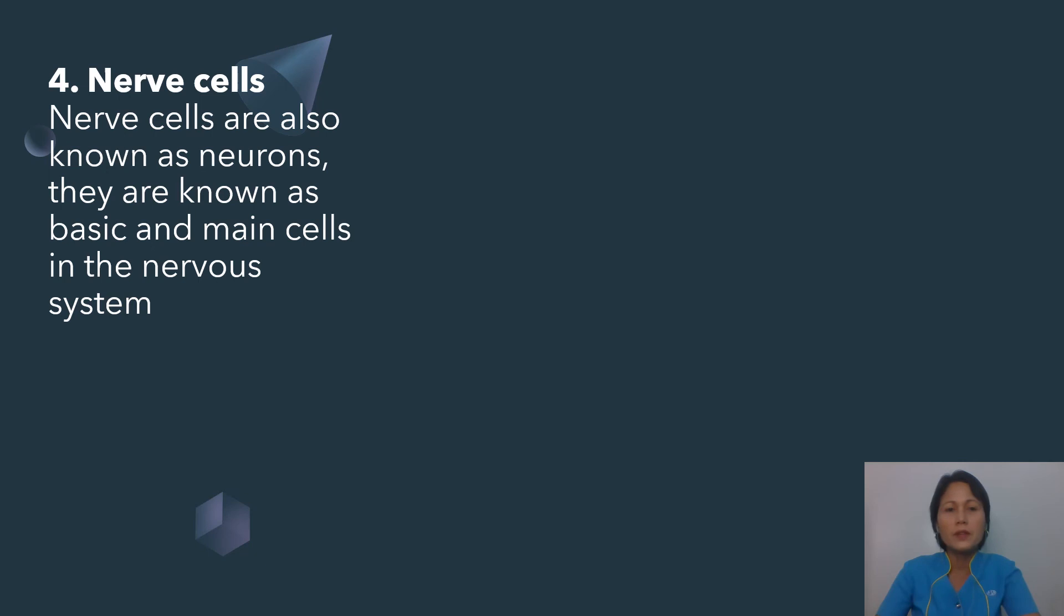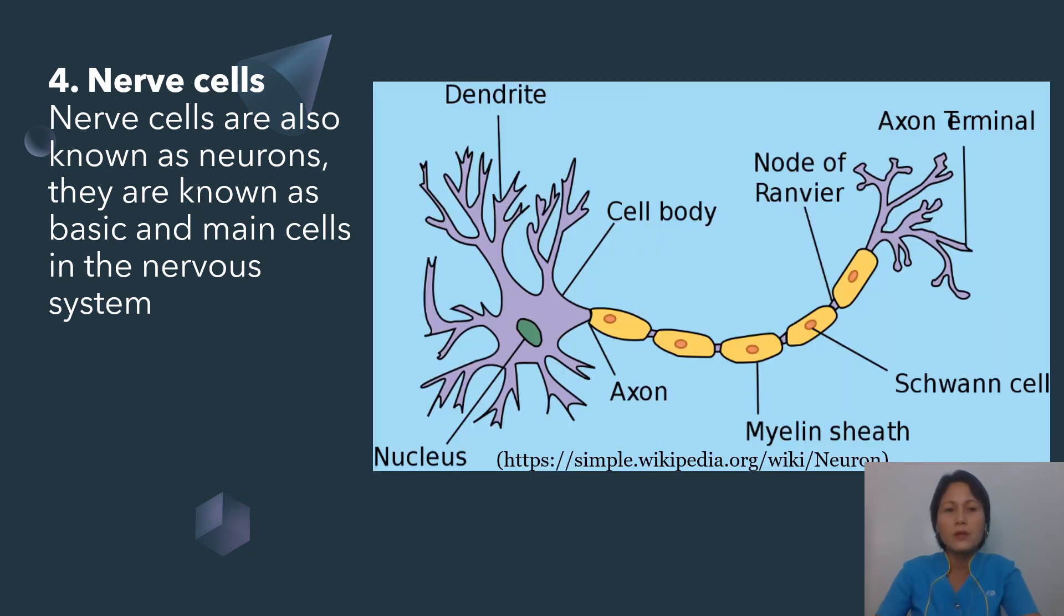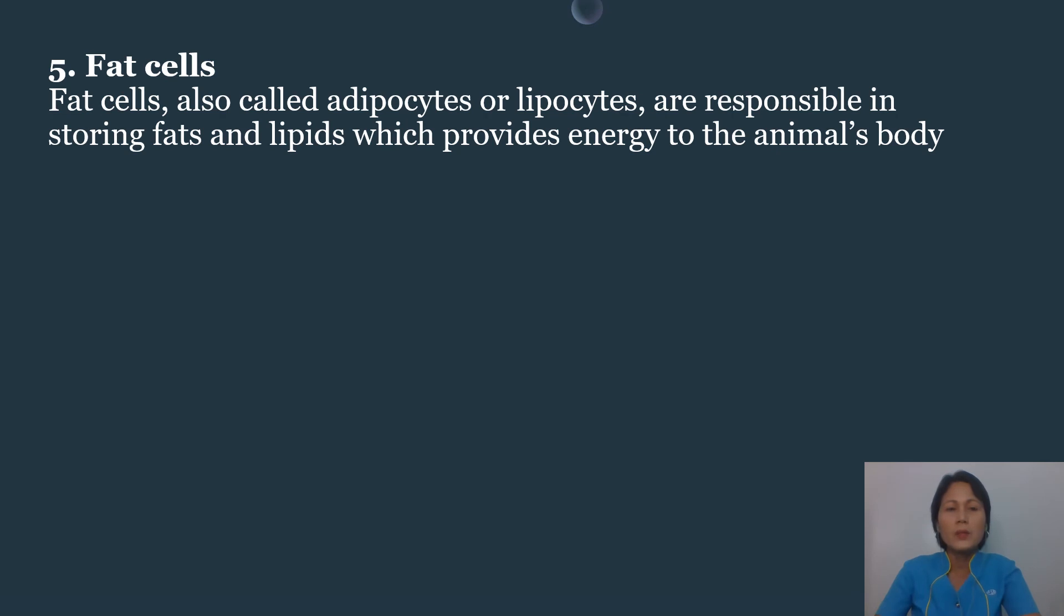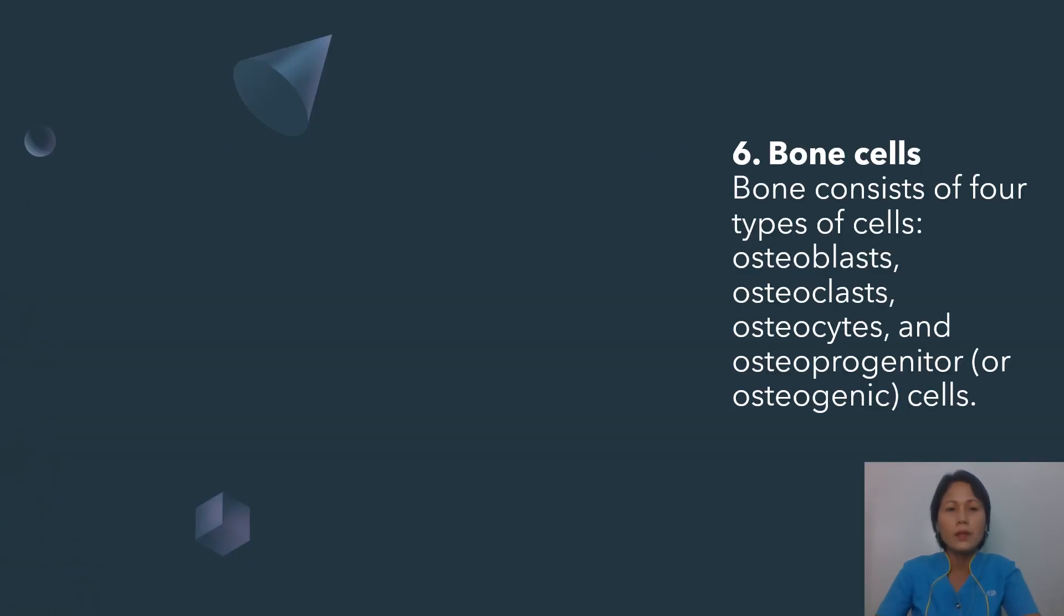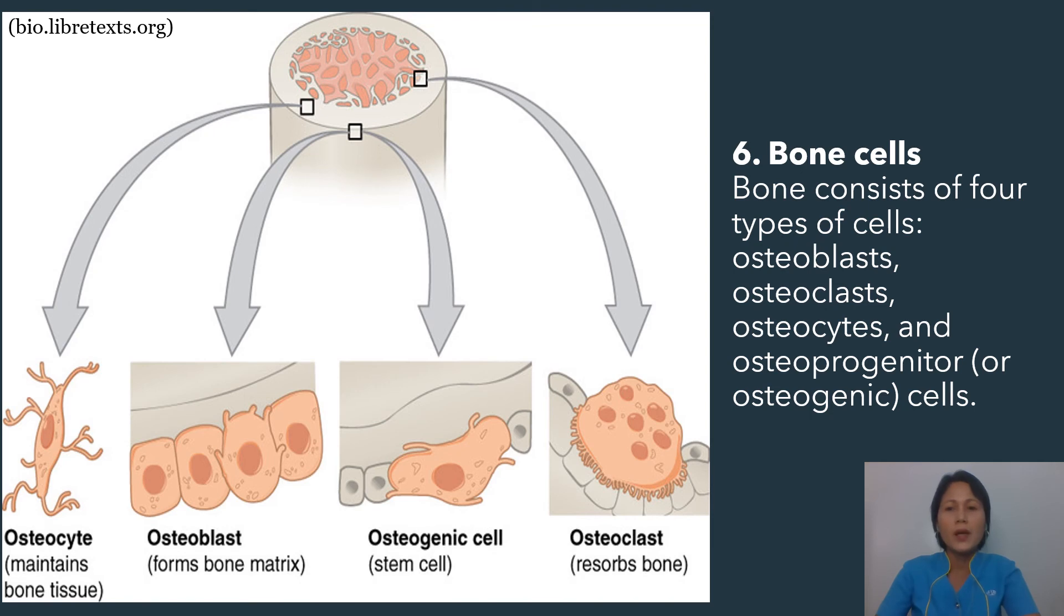We also have the nerve cells, which are also known as the neurons, and they are known as the basic and main cells in the nervous system. We also have the fat cells. These are also called adipocytes or lipocytes. They are responsible in storing fats and lipids, which provides energy to the animal's body. We also have the bone cells, comprising four types of cells: the osteoblasts, osteoclasts, osteocytes, and osteoprogenitor or osteogenic cells.